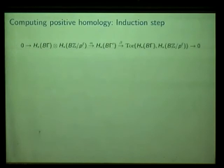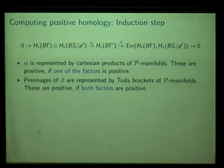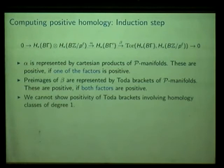There is a problem: in the Tor part we have positive scalar curvature only if both factors are positive, which is not the case if one factor has degree one. These total brackets appear even for non-toral manifolds. So we cannot show positivity for all classes: there is one particular problem, namely total brackets with one-dimensional classes, and this took me quite a while to resolve. The only way is to restrict to a certain subgroup of this homology group and deal specifically with p-toral classes.